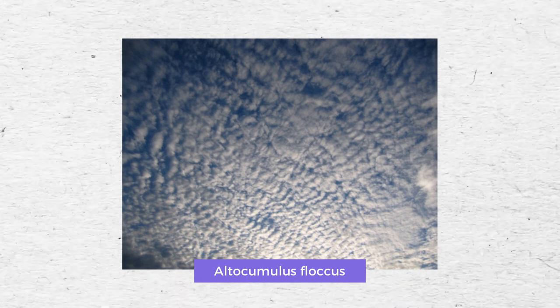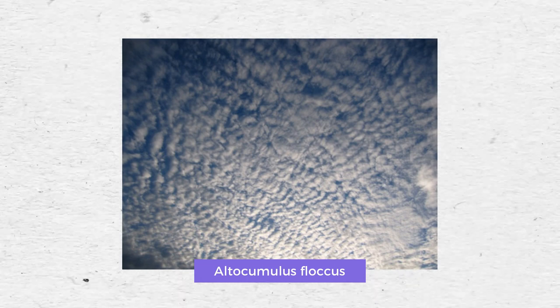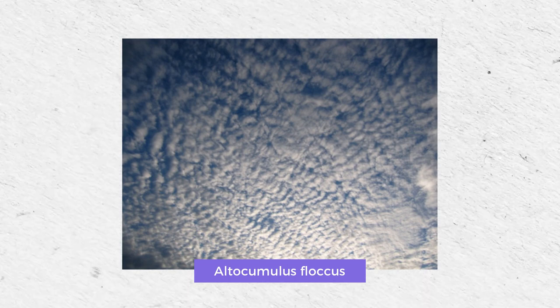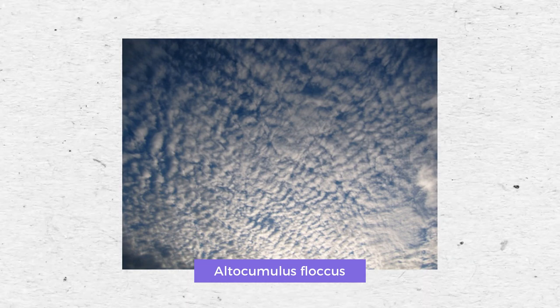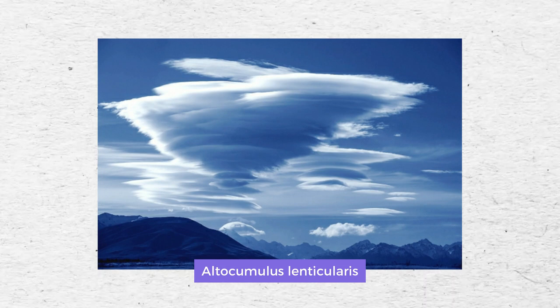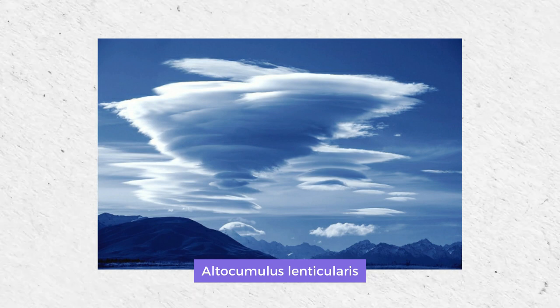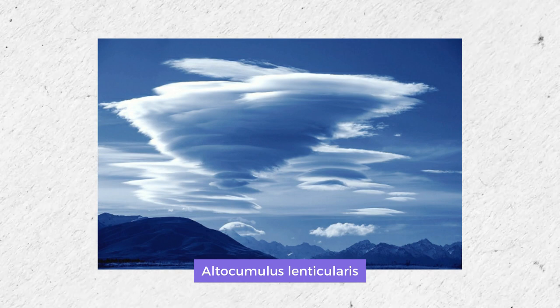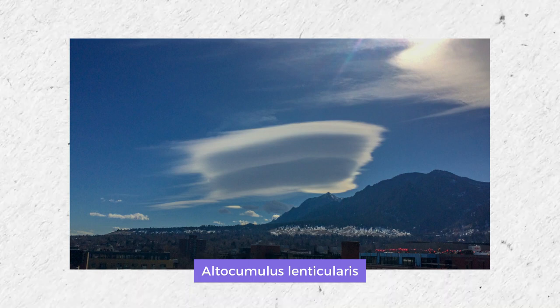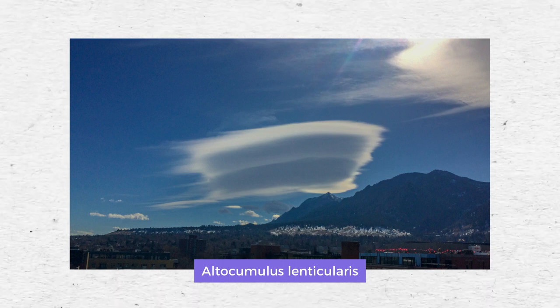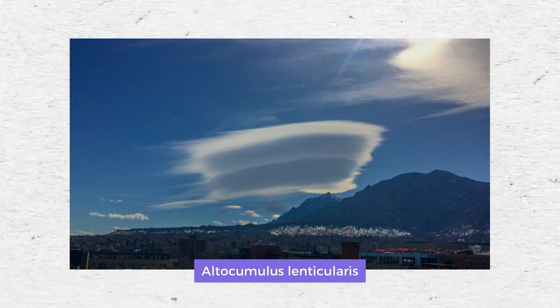Altocumulus floccus is a small tuft of cumuliform appearance. It sometimes forms as a result of the dissipation of the base of altocumulus castellanus. Altocumulus lenticularis is a type of altocumulus that appears as lens-shaped patches, viewed from above. A thin altocumulus lenticularis can be transparent enough to reveal the ground, but still looks fairly dark. A thick altocumulus lenticularis looks white and bright, and glories may be observed on it.